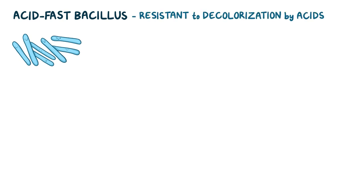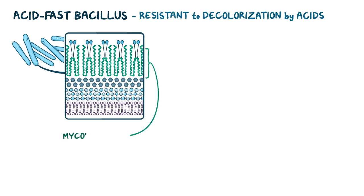Now, Mycobacterium leprae is an acid-fast bacillus, which means it's resistant to decolorization by acids, and it has a high content of mycolic acid in its cell wall, which makes it waxy, hydrophobic, and impermeable to routine stain like Gram stain.